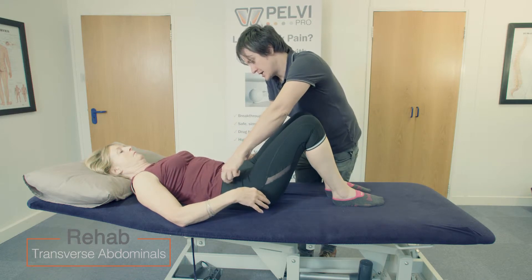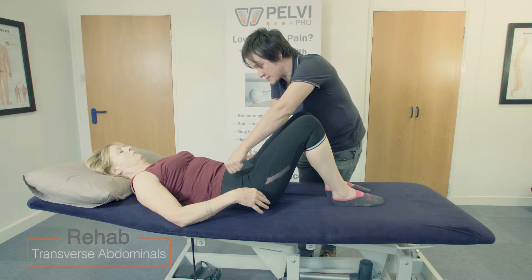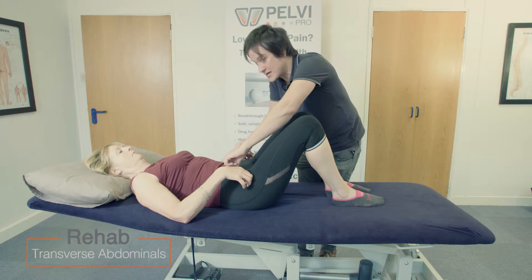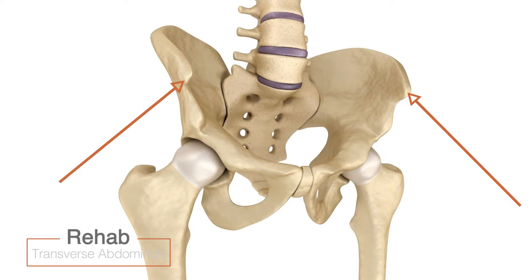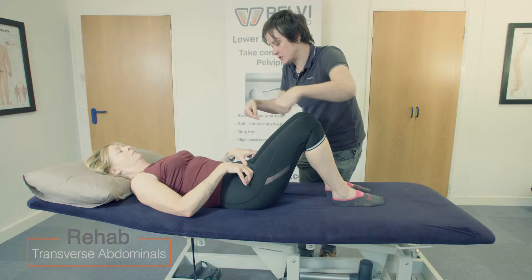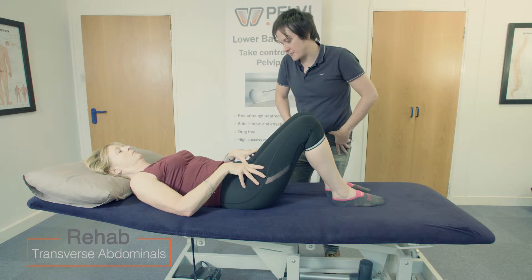Locate the two furthest, most prominent bony points at the top of the hips there. Just put your thumbs on there — really easy to locate. Find those, come in an inch, then down an inch. That's it.